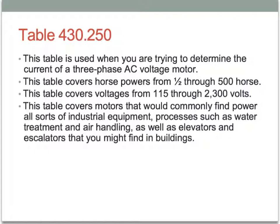Table 430.250 covers motors that you'd commonly find powering all sorts of industrial equipment — sawmills, gravel pits, Trantec automation robots, wastewater treatment plants, air handling equipment like at the Great Wolf Lodge, and even elevators and escalators — all utilizing three phase motors.